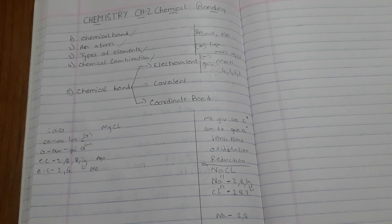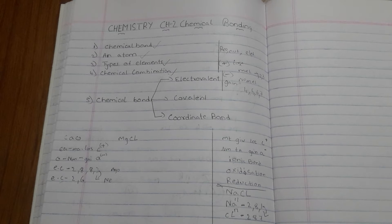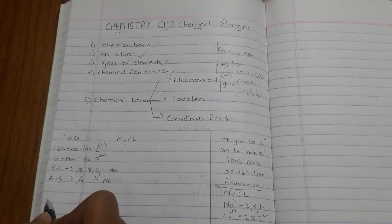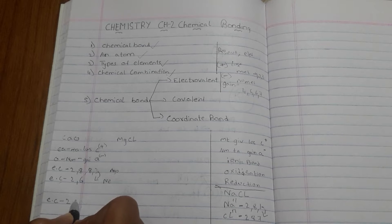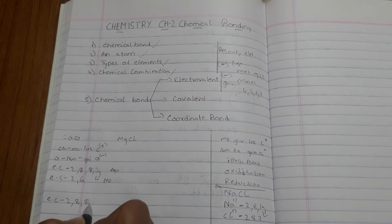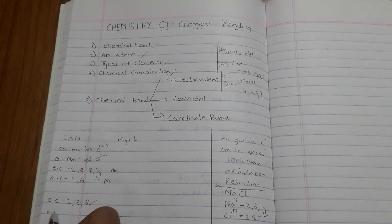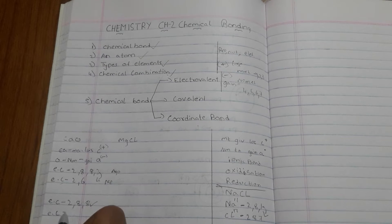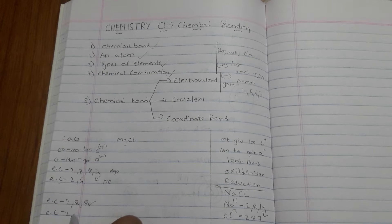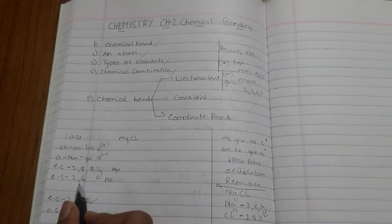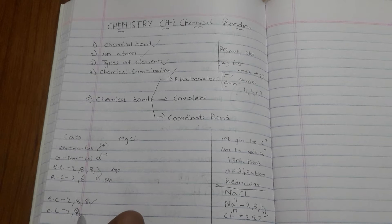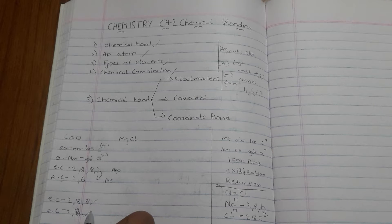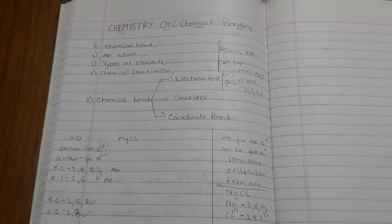When calcium gives two electrons to oxygen, the electronic configuration of calcium becomes 2, 8, 8 — a stable configuration. The electronic configuration of oxygen was 2, 6, and after receiving two electrons it becomes 2, 8, which is also a stable configuration. I will now show an example for better understanding.